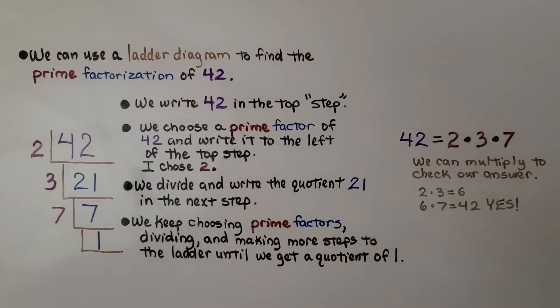We can use a ladder diagram to find the prime factorization of 42. We write 42 in the top step and choose a prime factor of 42 and write it to the left of the top step. I chose 2. We divide and write the quotient. 42 divided by 2 is 21. We write that in the next step.